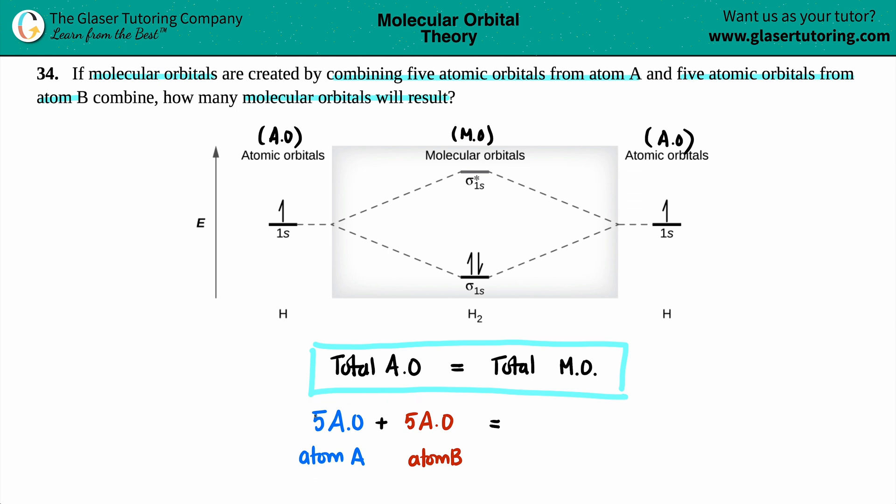So it's the total of these. So you got to just add them up. So five plus five is a total of 10 molecular orbitals. And that is your final answer.